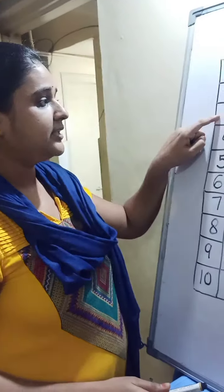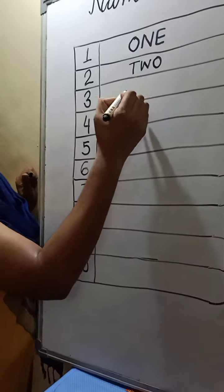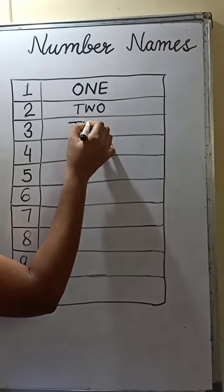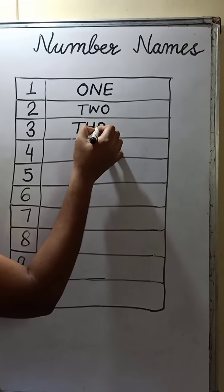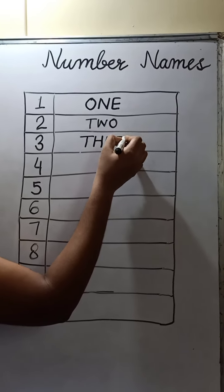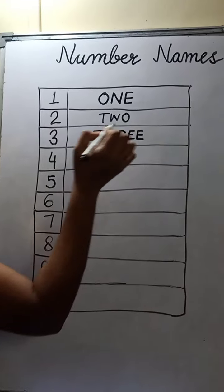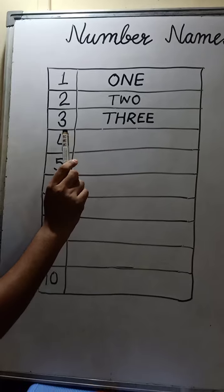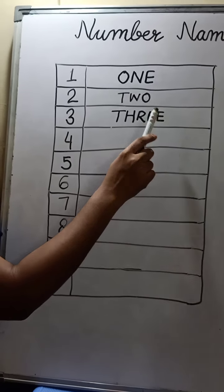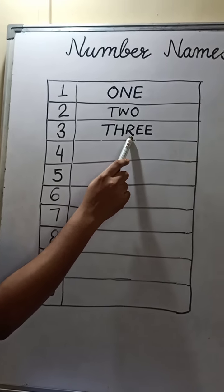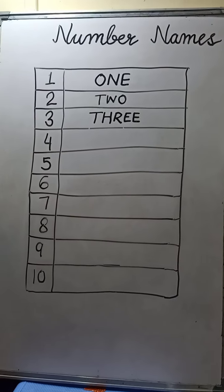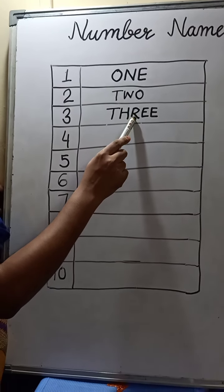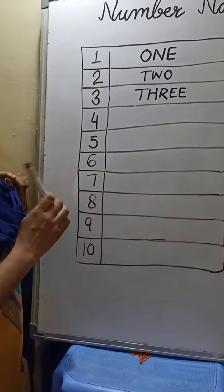Now next number is 3. And the number name will be T-H-R-E-E. When the letter repeats 2 times, then it is called double. So it is double E. T-H-R-E-E. Now let's speak with me. T-H-R-E-E. Very good.